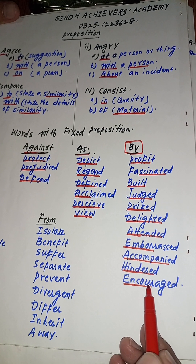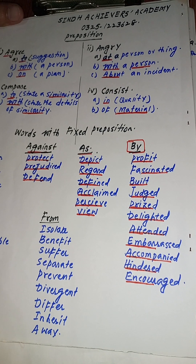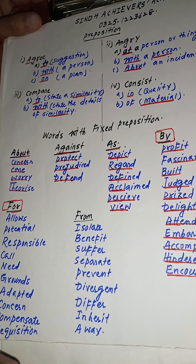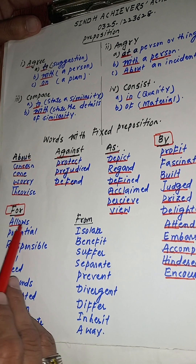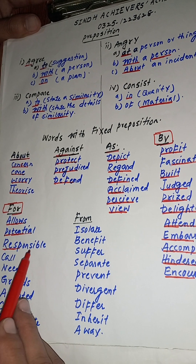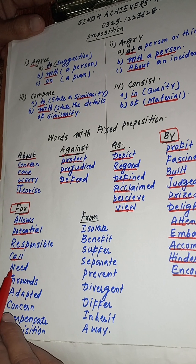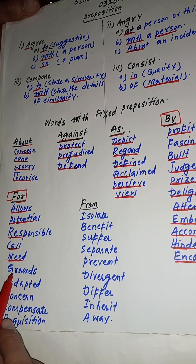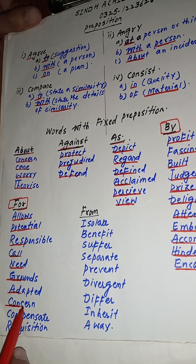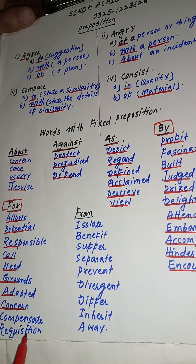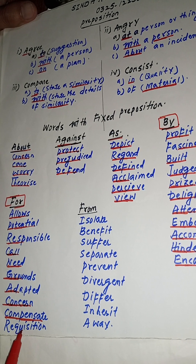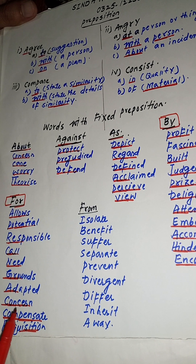We have the preposition FOR. These are the verbs which take the preposition 'for': allows for, potential for, responsible for, call for, need for, grounds for, adapted for, concern for, compensate for, and requisition for.